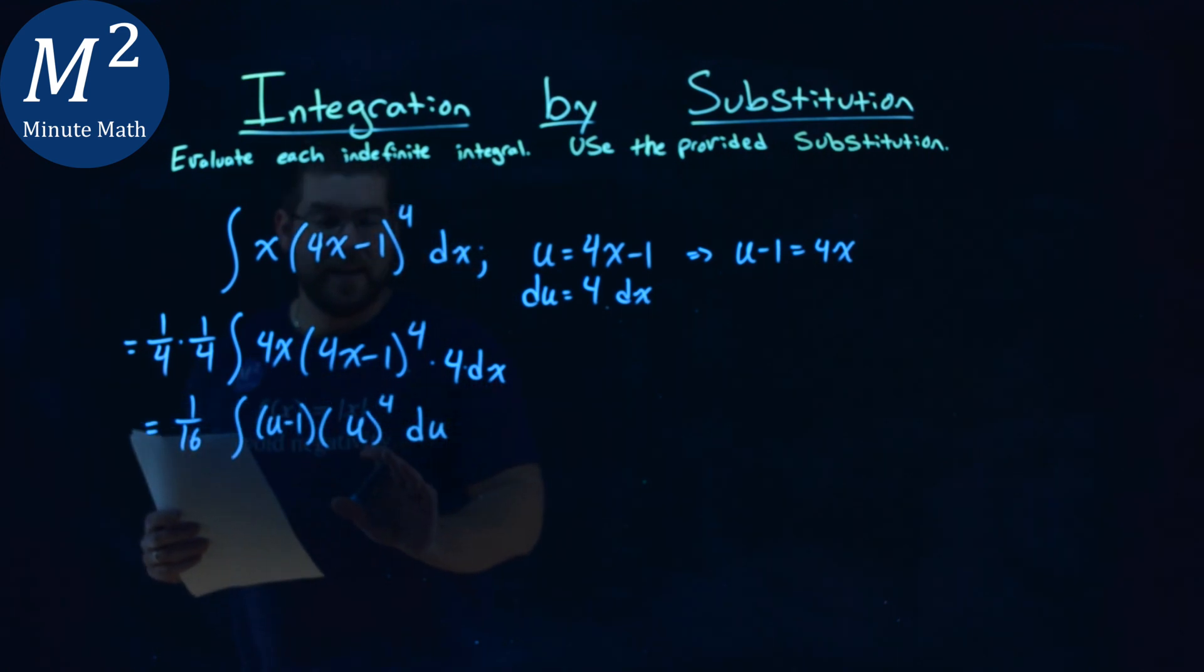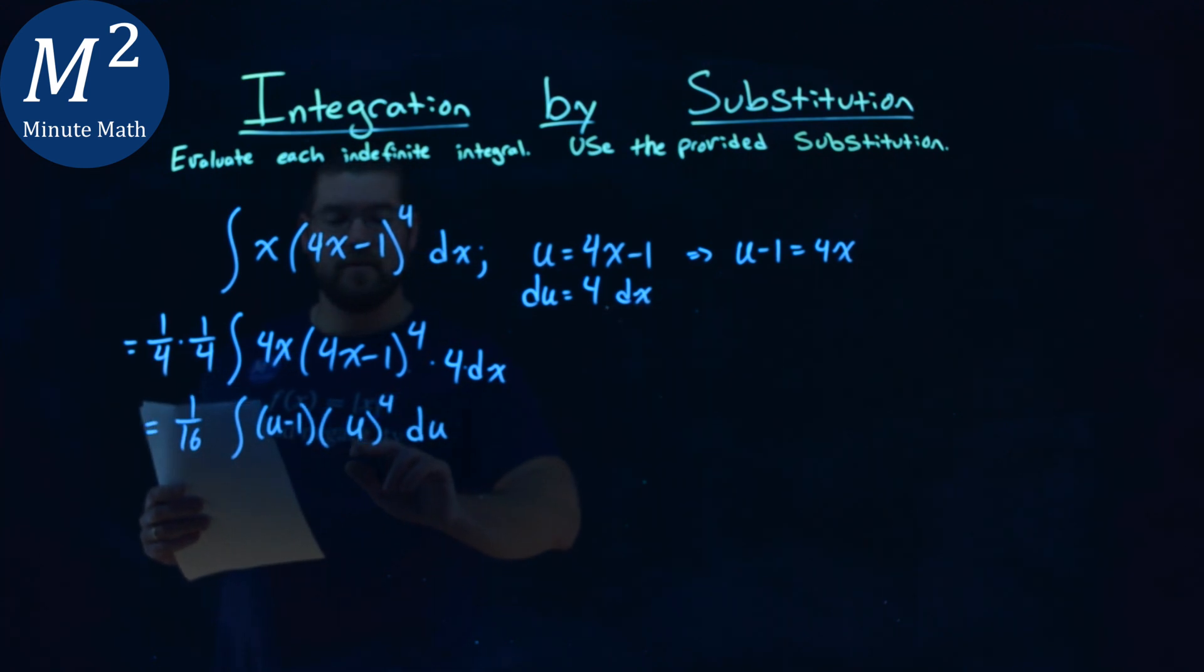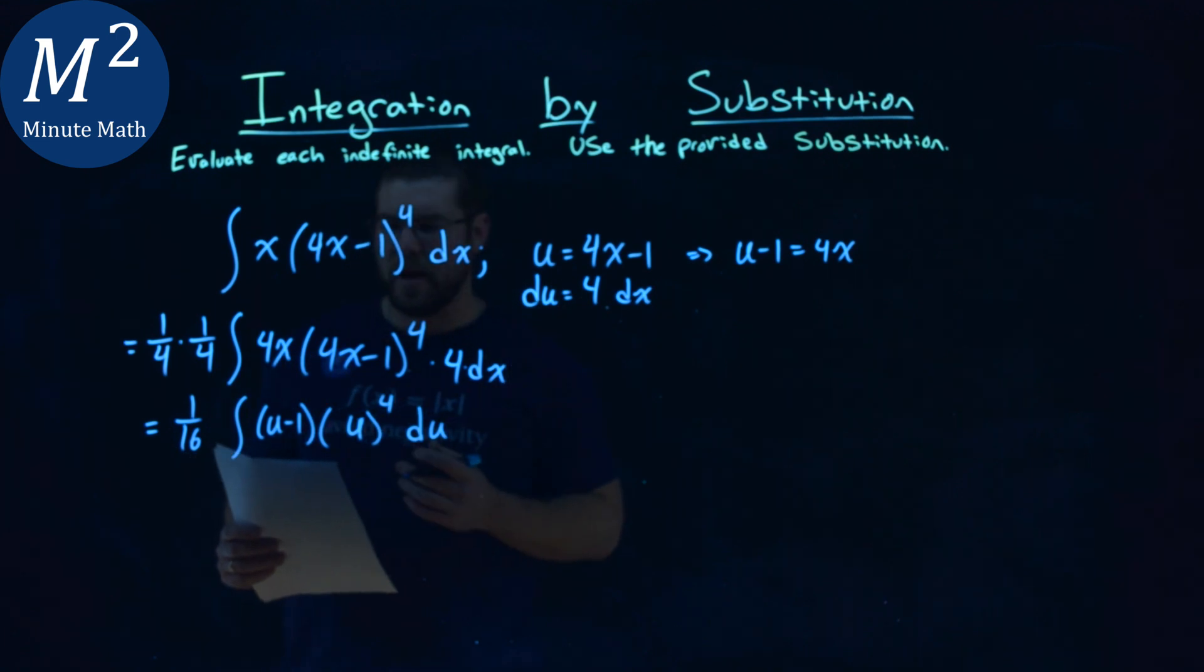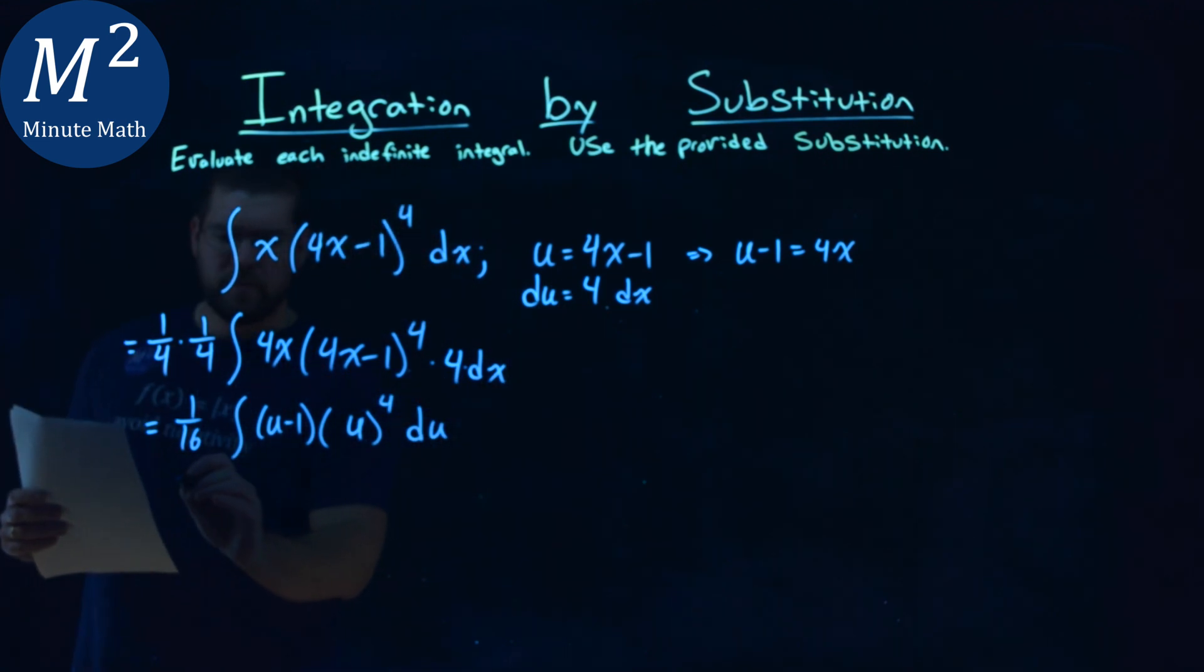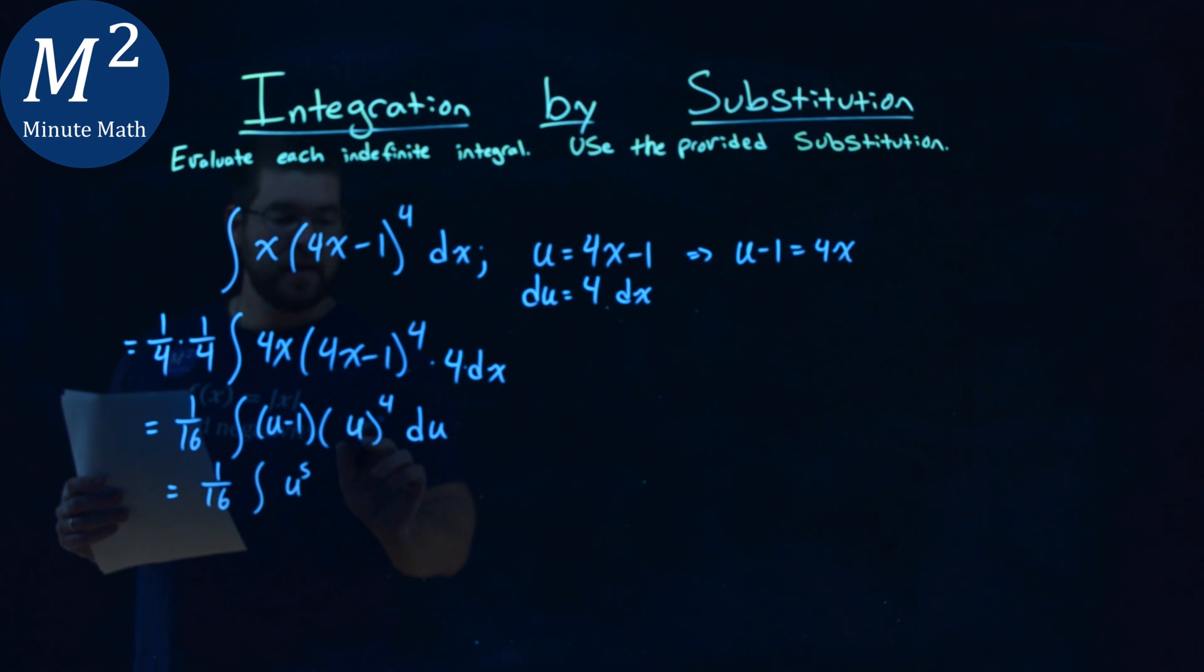Now, this is a key moment to say your prep work ahead of time makes this problem a lot easier. A lot of students don't like to do that. So do that prep work, it'll save you time in the future. So let's go simplify this before I take my integral. 1 over 16 here, the integral, let's go multiply that out. u to the 4th power times u is u to the 5th power, and u to the 4th power times a minus 1 is a minus u to the 4th power, du.